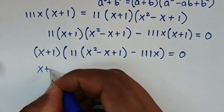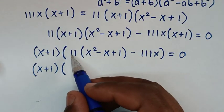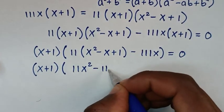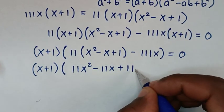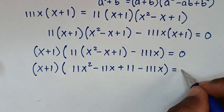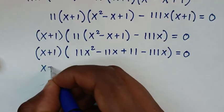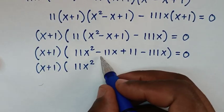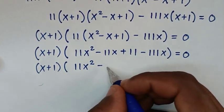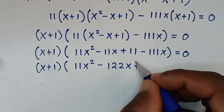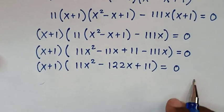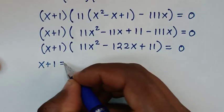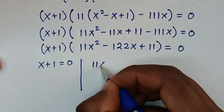We take 11 inside the bracket: 11 times x squared is 11x squared, 11 times negative x is negative 11x, and 11 times 1 is plus 11. So we have (x plus 1) times (11x squared minus 11x plus 11 minus 111x) equals 0. Combining the x terms, negative 11x minus 111x is negative 122x, giving (x plus 1) times (11x squared minus 122x plus 11) equals 0.